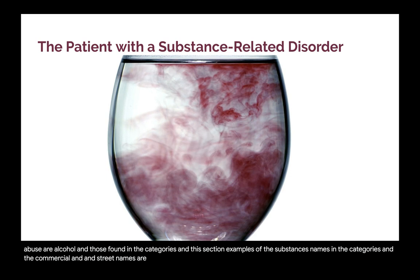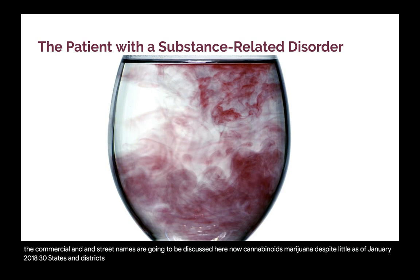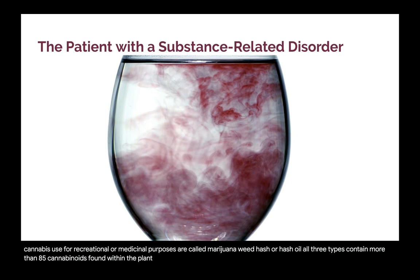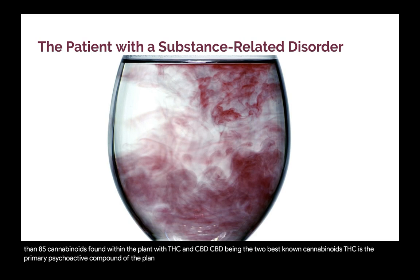Cannabinoids — marijuana: despite cannabis use being illegal at the federal level, as of January 2018, 30 states and the District of Columbia have legalized marijuana for medical or recreational use. The three basic types of cannabis are marijuana, weed, hash, or hash oil. All three types contain more than 85 cannabinoids, with THC and CBD being the two best known. THC is the primary psychoactive compound, which can make a person feel paranoid or anxious. CBD is non-psychoactive, so patients do not feel high but gain the medicinal and therapeutic benefits cannabis can offer.